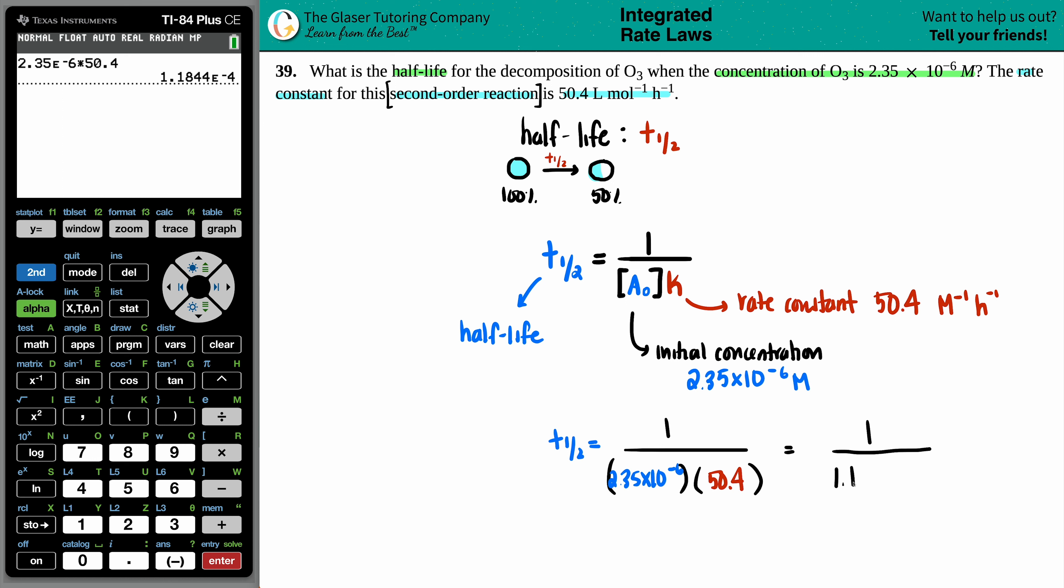Okay. So I get 1.1844 times 10 to the negative 4th. And now let's just do the division to get our half-life. 1 divided by this answer. And there we go. Looks like 3 sig figs. So maybe I'll say 8.44 times 10 to the 1, 2, 3.